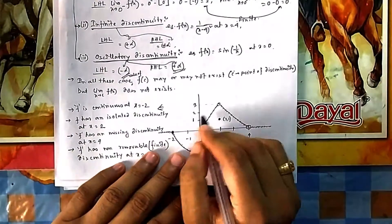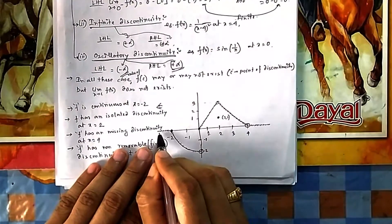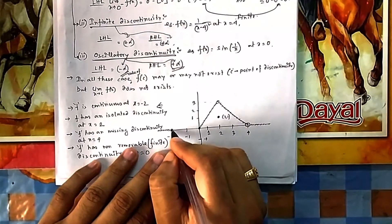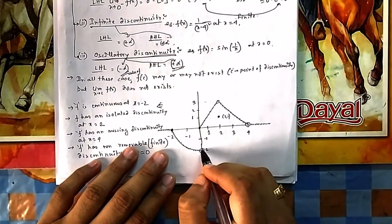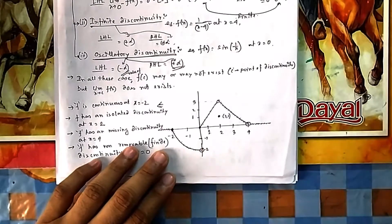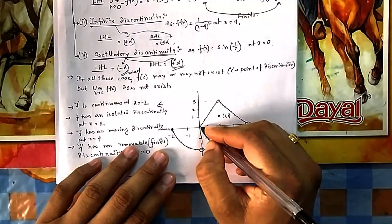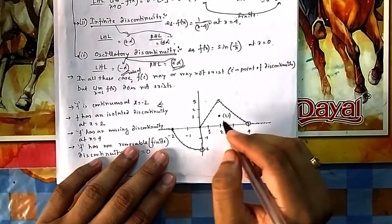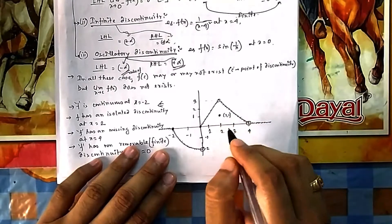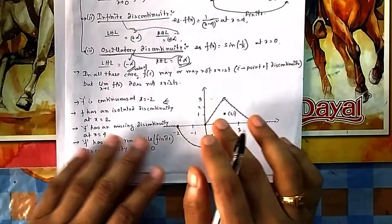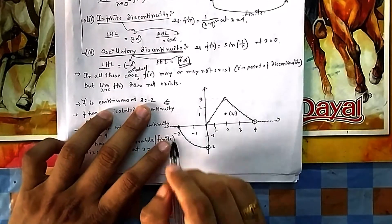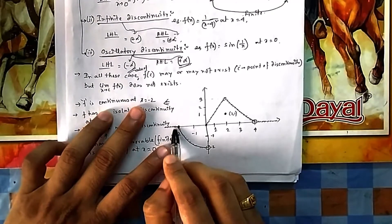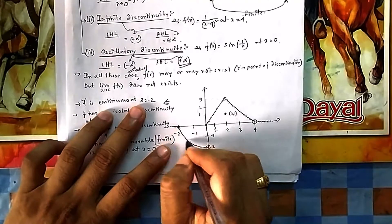Now consider a drawn graph to understand all types of discontinuity. The shaded region is the graph of the function. A dark filled circle at (−2, 0) means f(−2) = 0. An open bubble at (0, −2) means f(0) ≠ −2; instead, f(0) = 0 from another part of the graph. At x = 2, there are open bubbles at the curve ends but a filled point at (2, 1). At x = 4, the curve has open bubbles and f(4) is not defined. At x = −2, both left and right outputs approach 0, so it is continuous there.